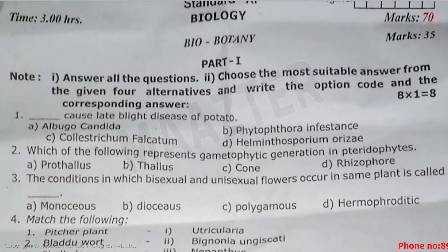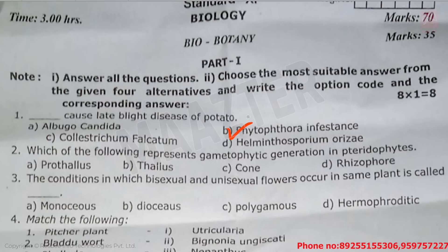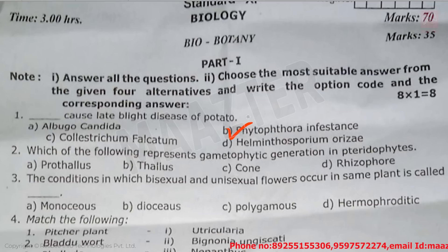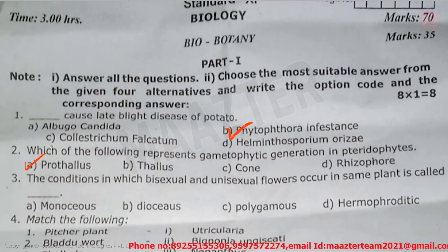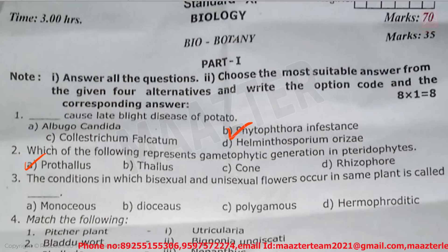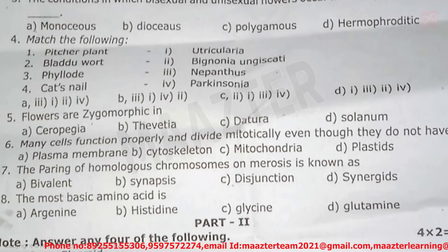First question: what causes late blight disease of potato? Option B. Next, which of the following represents gametophytic generation in pteridophytes? Option A. Third, the condition in which bisexual and unisexual flowers occur on the same plant is called — Option A.